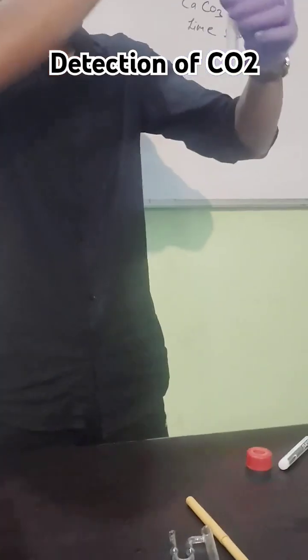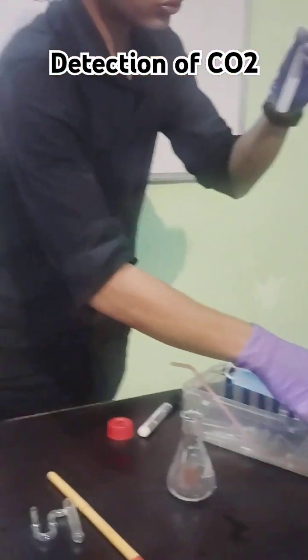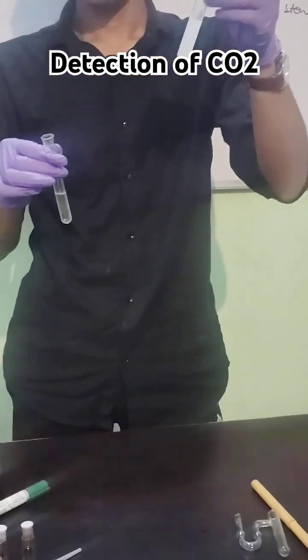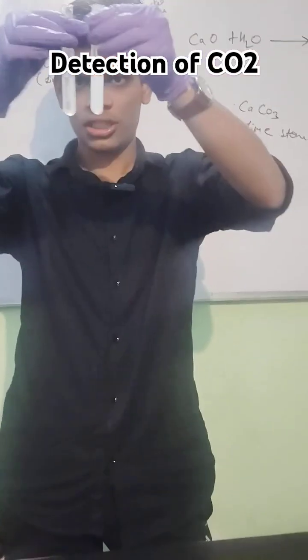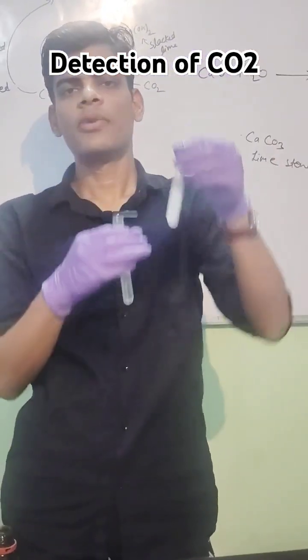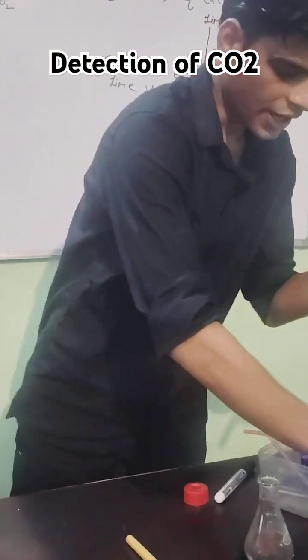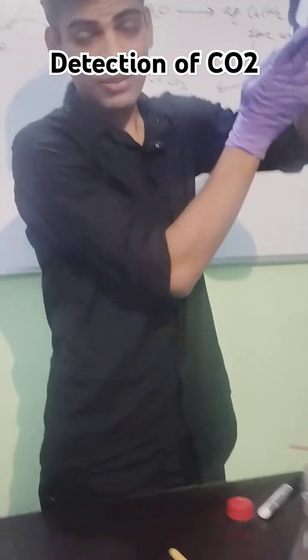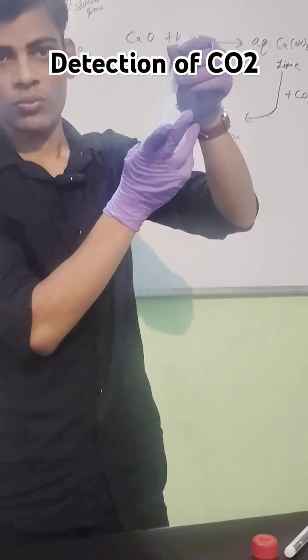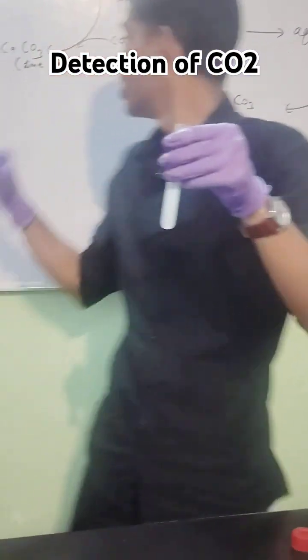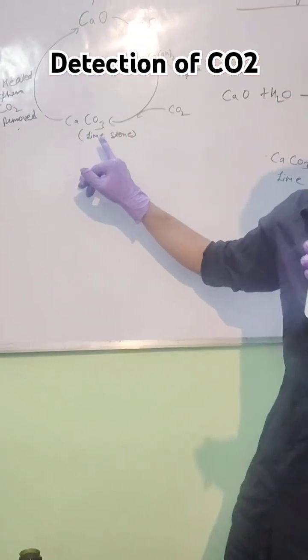Then you can clearly observe that it turns into milky color, or you can say cloudy color. You can see the observation. This confirms the presence of CO2. After some time you can observe that it forms the white precipitate in the test tube, which is known as calcium carbonate or also called limestone.